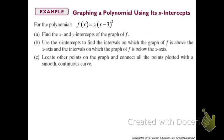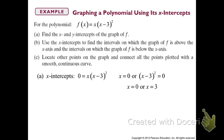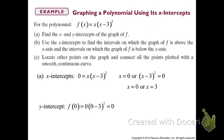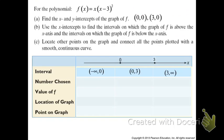Graphing this polynomial — f of x equals x times x minus 3 to the second power — we follow these steps: find the x and y intercepts of the graph first, use the x-intercepts to find the intervals when f is above and below the x-axis, then connect all the points with a nice smooth continuous curve. The x-intercepts are 0 and 3, because when we set each factor equal to zero, we get 0 and 3. The y-intercept is when x equals 0, so the graph goes through the origin.